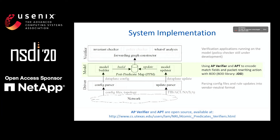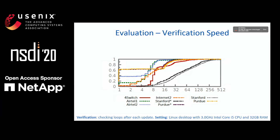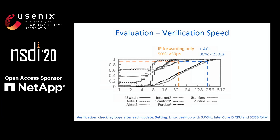On top of the model, we implemented an invariant checker that can check reachability properties like loop freedom and blackhole freedom. To evaluate APKIP, we use eight datasets in total, collected from Stanford, Internet2, Purdue, and DirtNet. The first six datasets only have updates of IP forwarding rules, while the last two have both IP forwarding rules and ACL rules. We run APKIP to process each rule update, and after each update, we let APKIP check loops. The computation time includes the time to update the model and also the time to verify the properties.